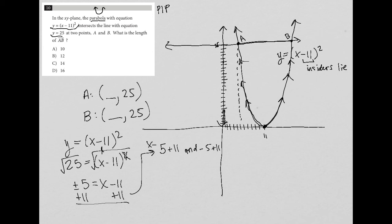These are my X values, right? X equals positive five plus 11 and X equals negative five plus 11. Again, that's just from doing the simple algebra here. Plus or minus five plus 11 equals X, right? I just broke that down into two parts. So five plus 11 is 16. So X equals 16.